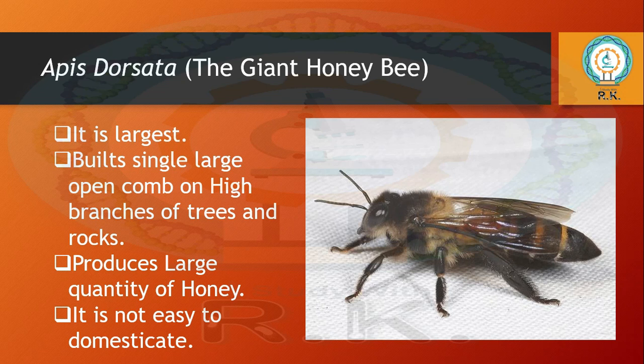The first species is Apis dorsata, the giant honey bee. It is the largest among all honey bee species and builds large open combs on high branches of trees and rocks. Due to its large size it produces a large quantity of honey, but it is also dangerous and not easy to domesticate.